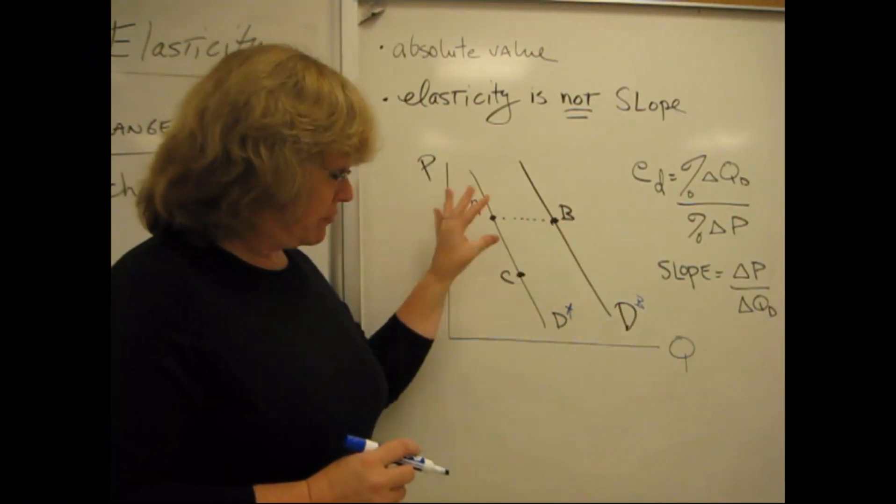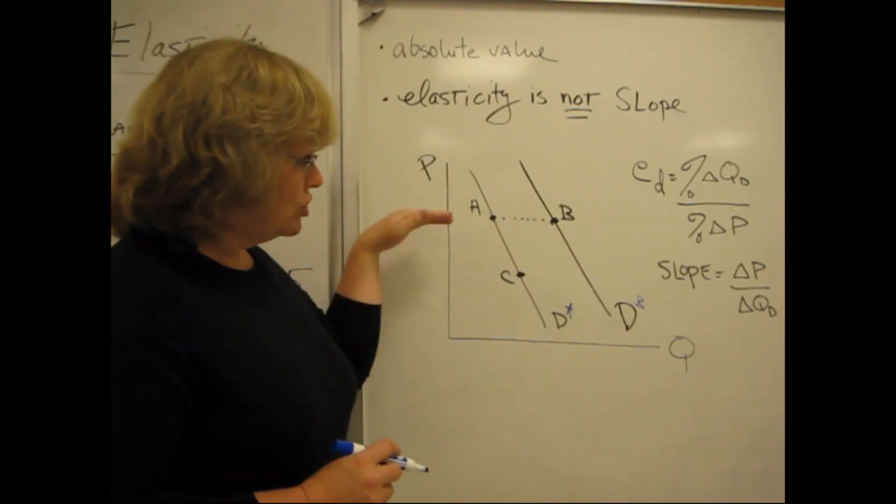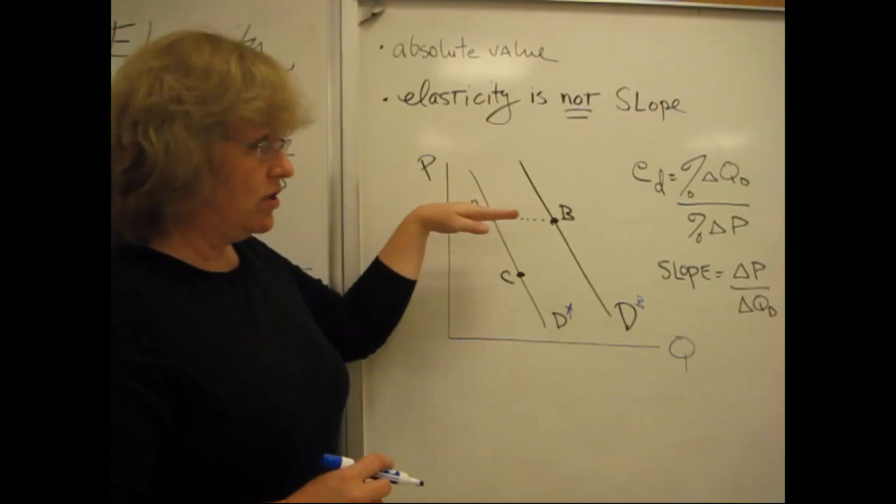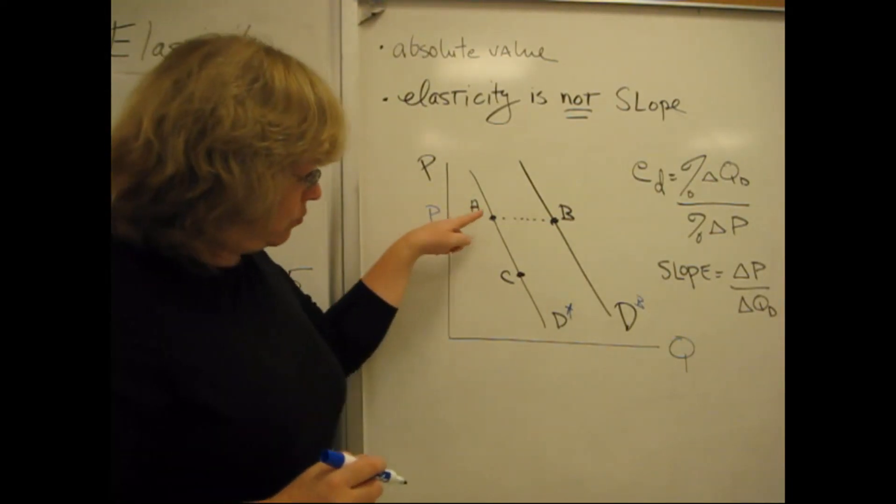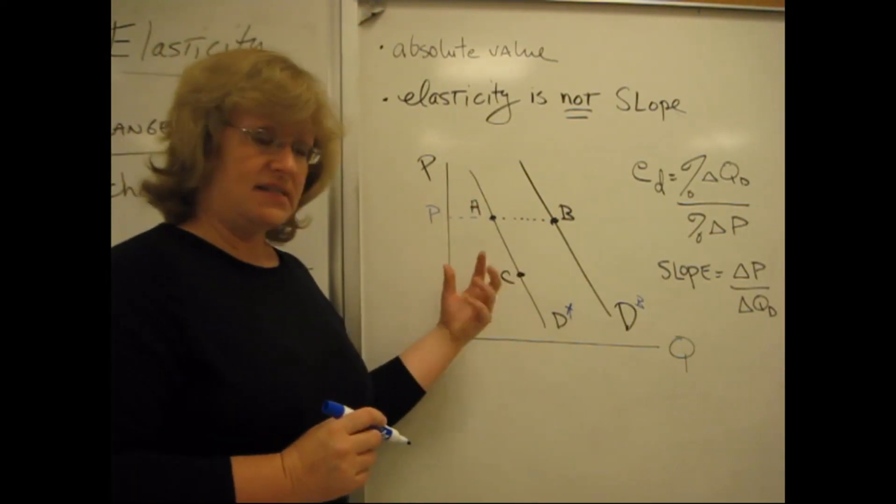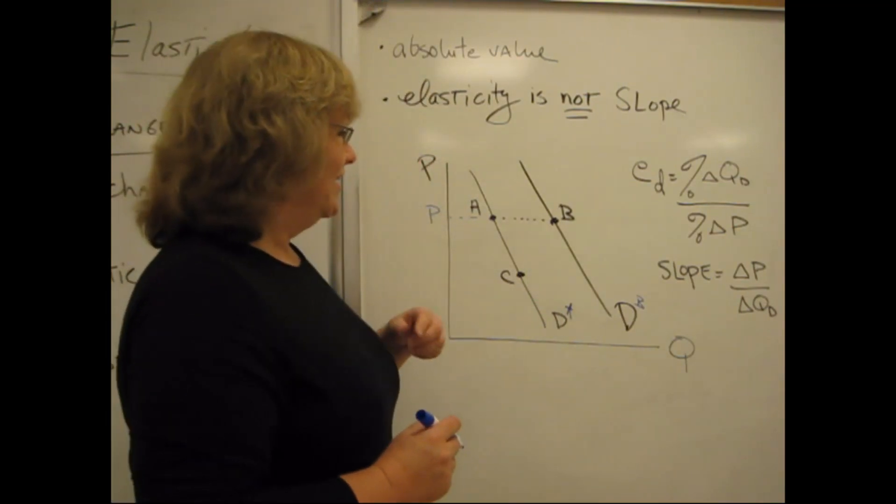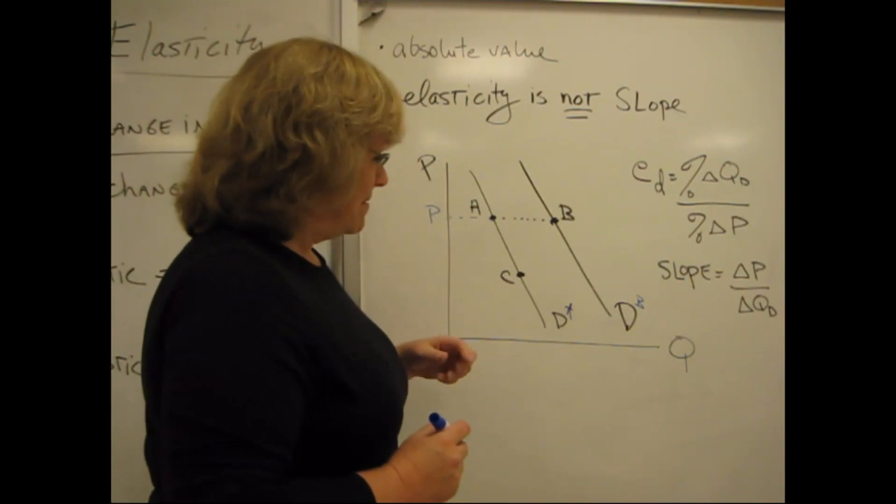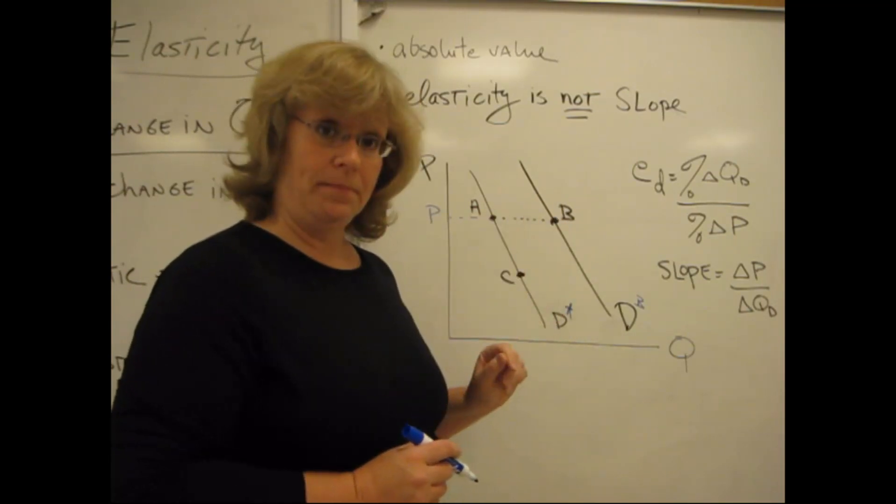And I've got a couple of three points here drawn, point A and point B, which are right across from each other on parallel demand curves. And you can imagine these being drawn at the exact same price. And then point A and C are along the same demand curve. Now although I'm not the best artist in the world, I'm drawing on a whiteboard instead of graph paper. Imagine that these two are straight lines, completely straight, and that they're parallel.